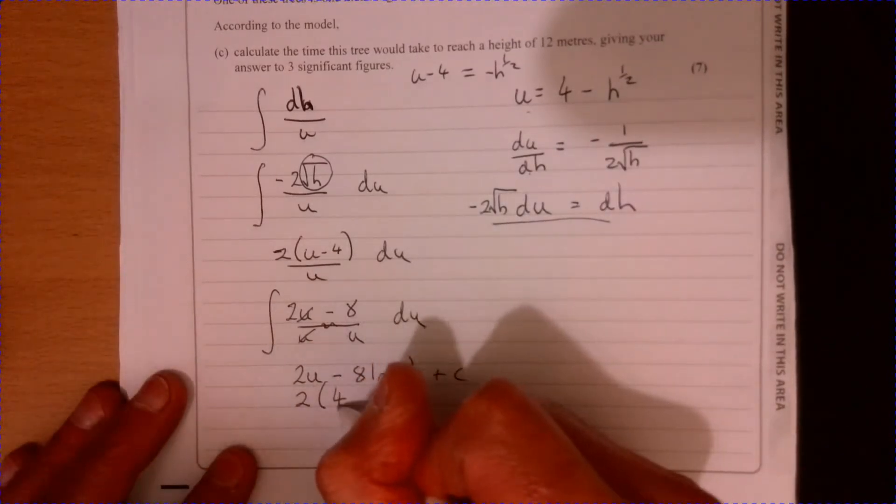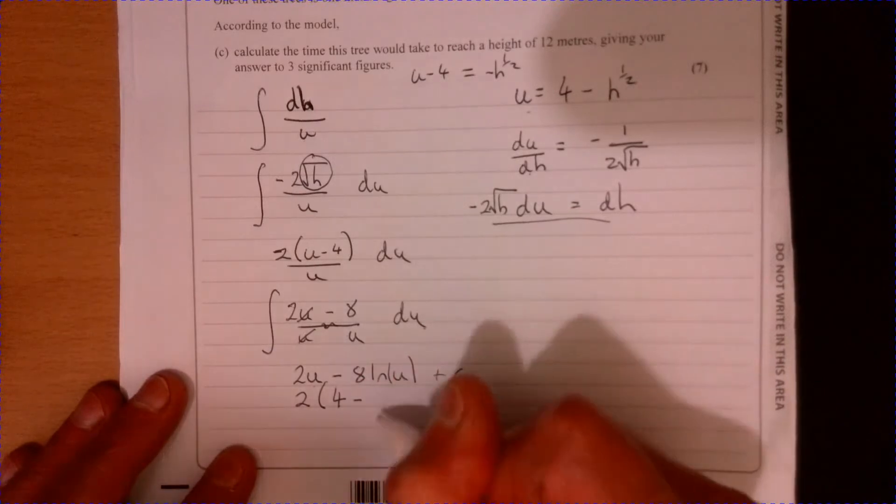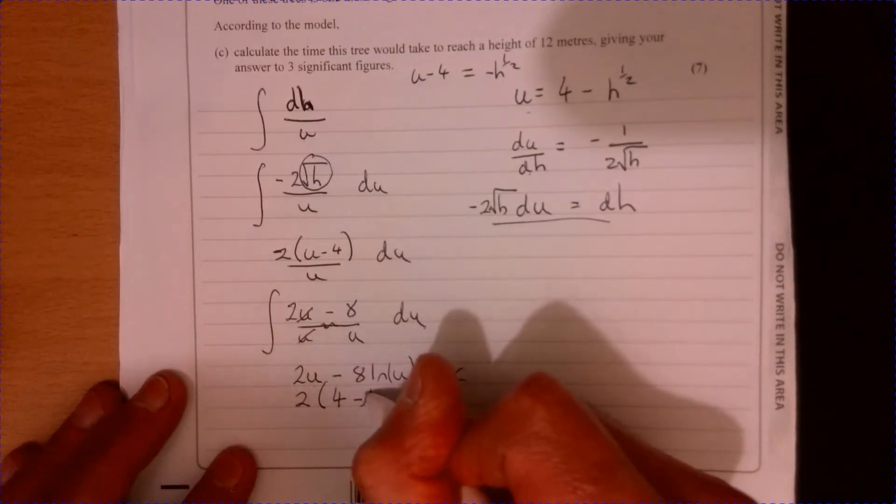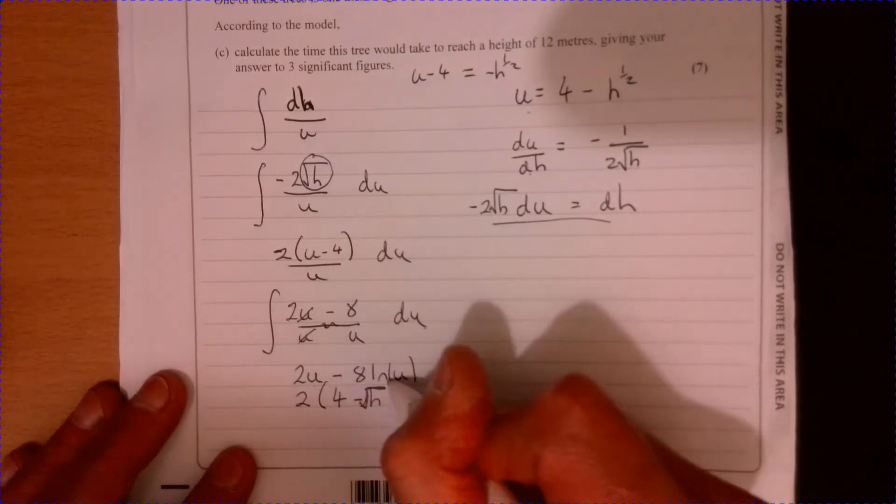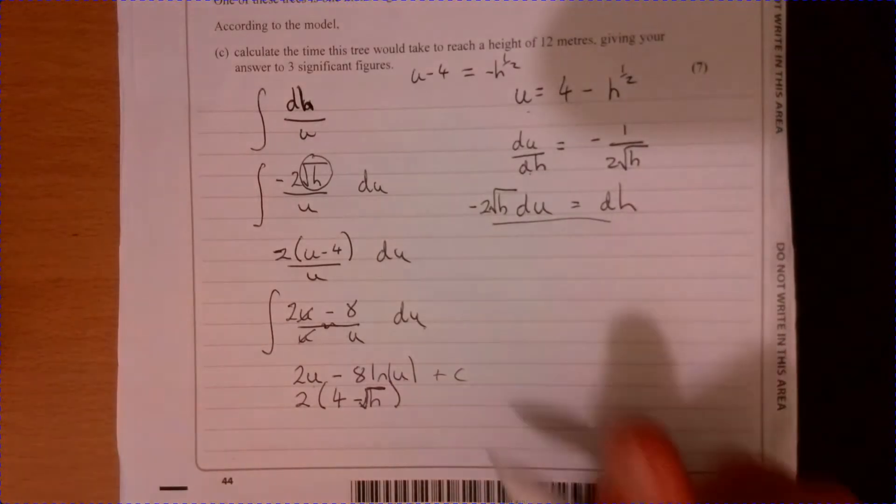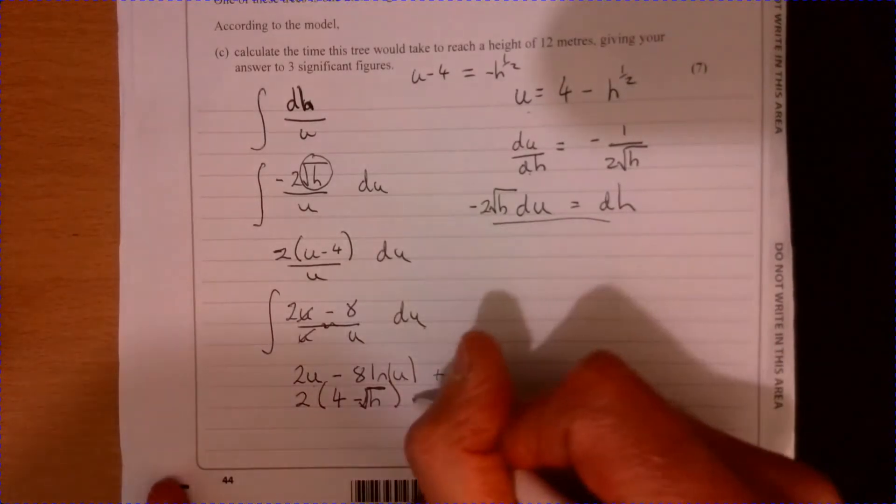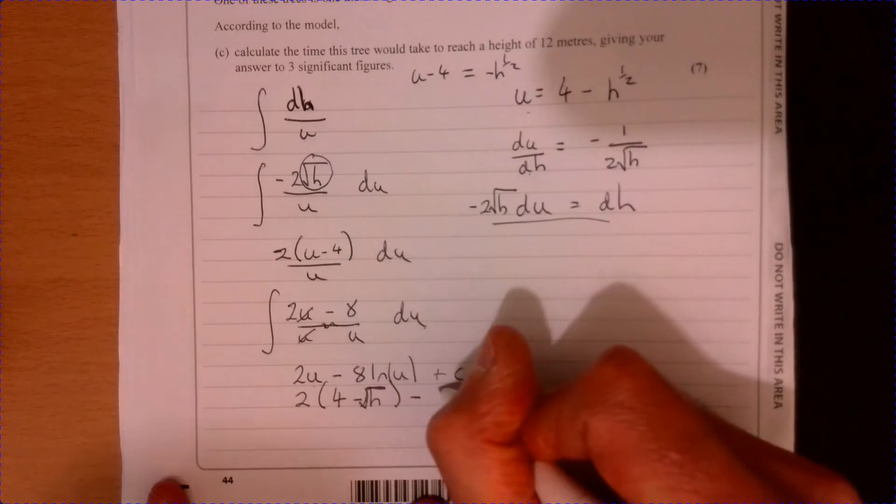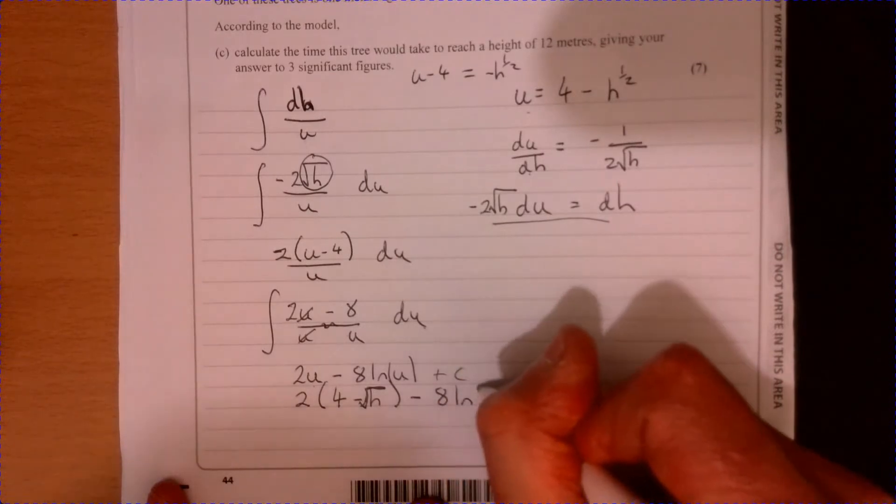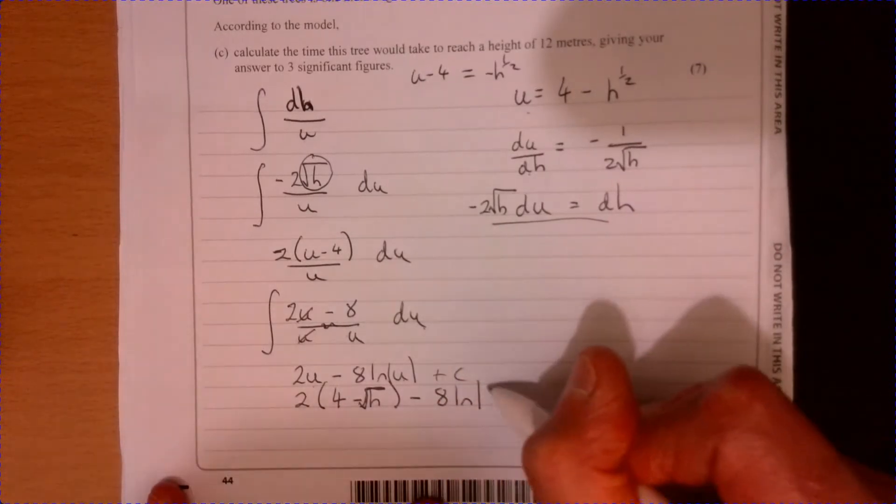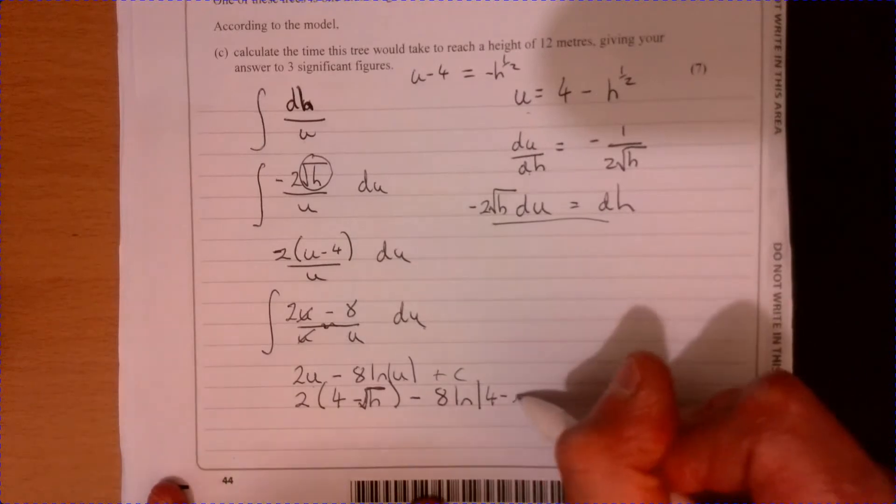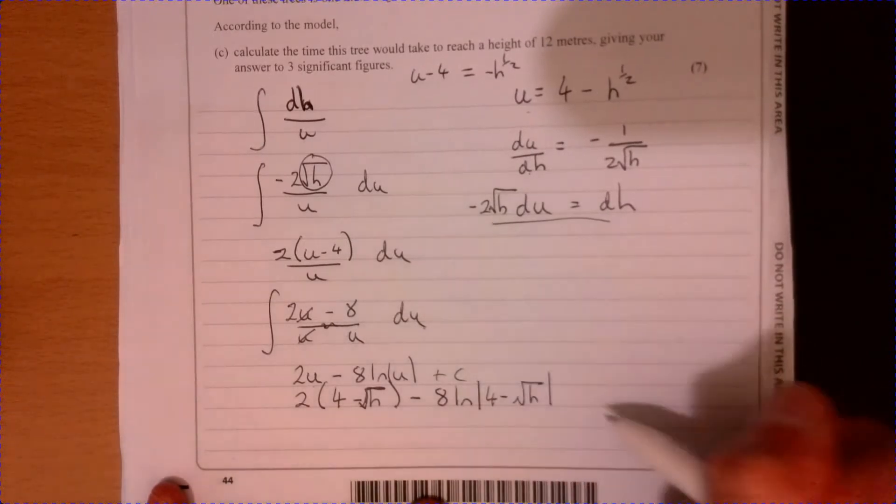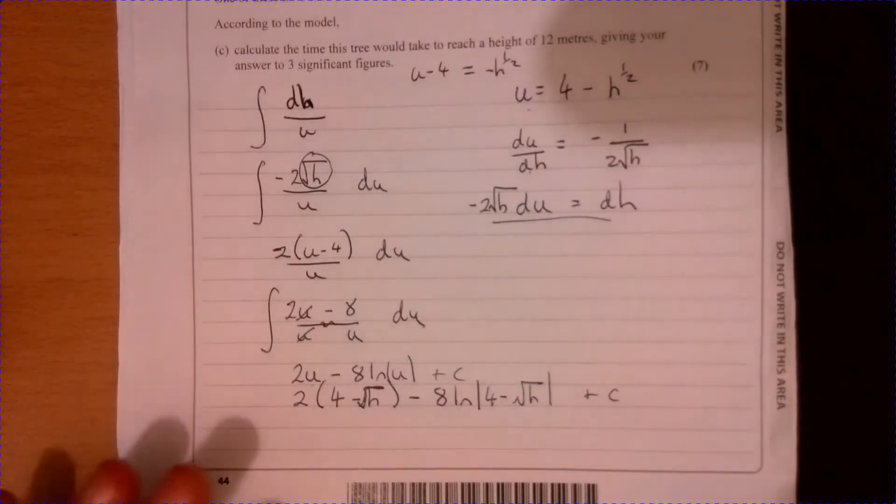Now let's go and substitute back in what u is. Remember u is this up here so we've got 2 times 4 minus, let's write it as, rather odd looking root. So we can have 2 times that and then minus and then we've got 8 ln and then 4 take away root h and then plus some c.